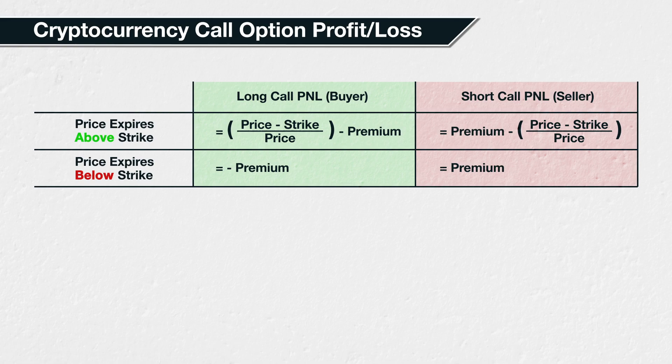If you're mathematically minded, you may be able to see that this section of the formulas will tend towards 1 as the Bitcoin price gets larger, given that the strike price never changes, and in turn this will help you see where the maximum profit or loss formula comes from.